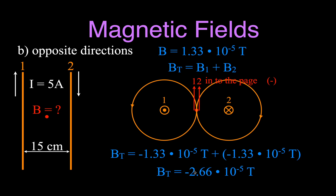So there you go. If you draw a picture and think about how it works out, it's not too complicated — you only have to calculate the magnetic field strength once: 1.33 × 10⁻⁵ Teslas. Thank you so much for watching. If you found the video helpful, please subscribe to our channel, give us a thumbs up, leave a comment, click the notification bell so you don't miss anything, and share this video. We'll see you for part two in the next video.